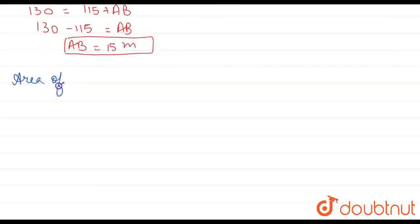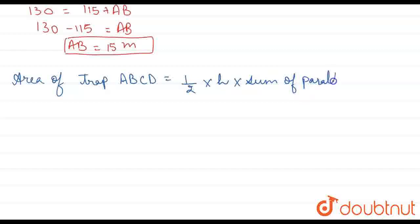Area of trapezium ABCD equals half times height times sum of parallel sides, which equals half times AB times AD plus BC.